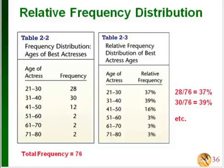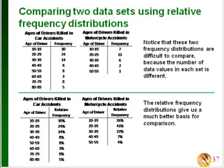For each class, take the frequency and divide by 76, then convert to percent. We use relative frequencies when comparing two sets of data where the total numbers of data values are different. Here we have drivers killed in car accidents versus drivers killed in motorcycle accidents — the car accident table has far more classes and a much larger total frequency, making direct comparison difficult. Converting to relative frequencies shows that the 20-to-29 age group was 24% for cars but 41% for motorcycles, revealing a quite significant difference.